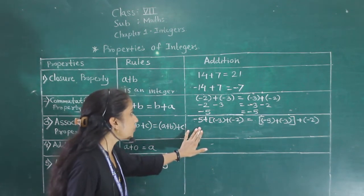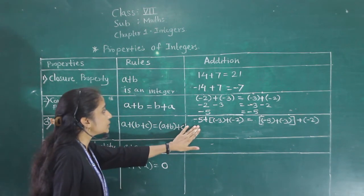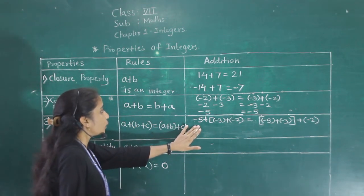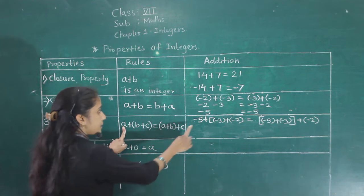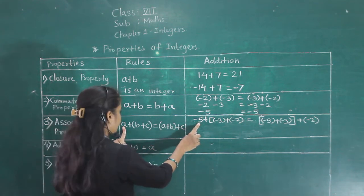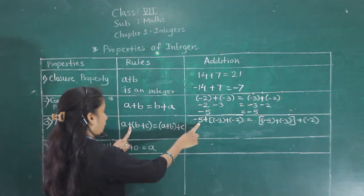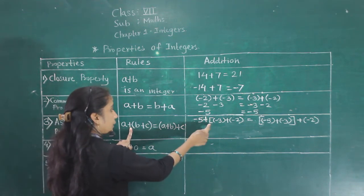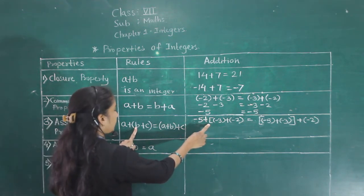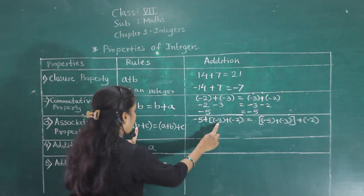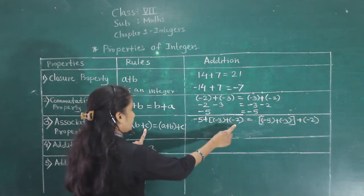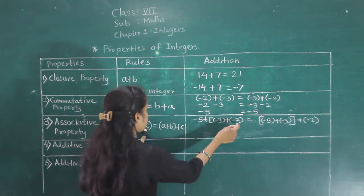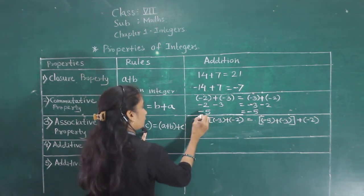Let's see if this associative property works in integers. A is minus 5, B is minus 3, and C is minus 2.